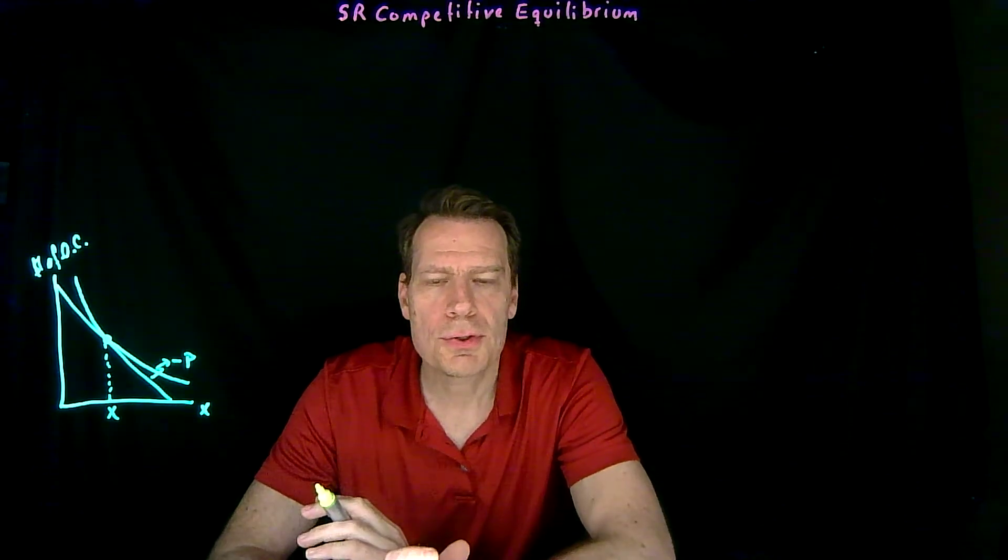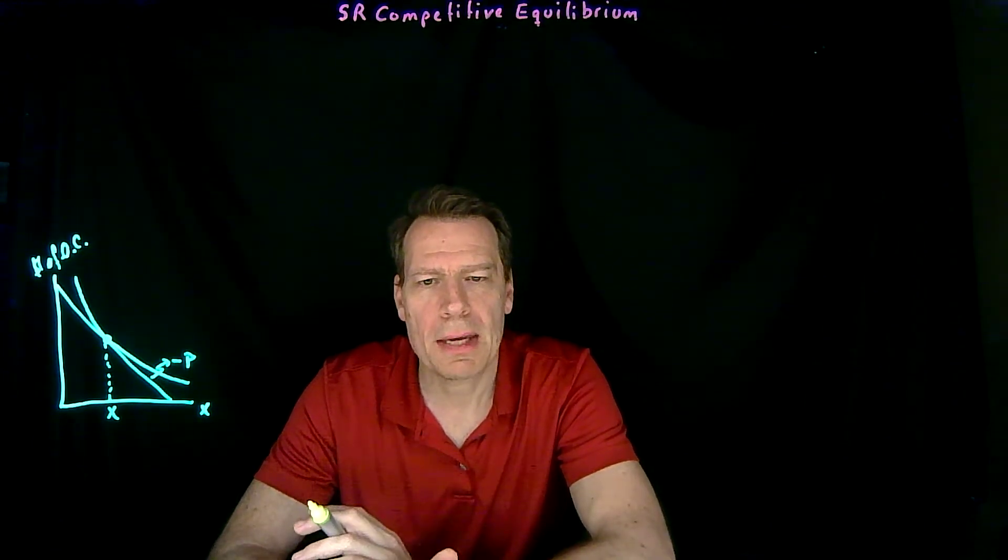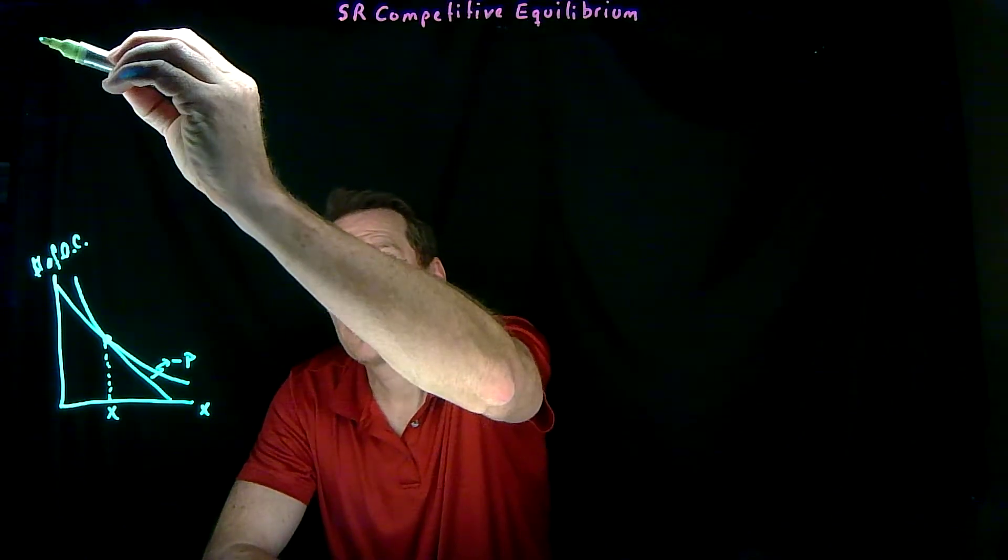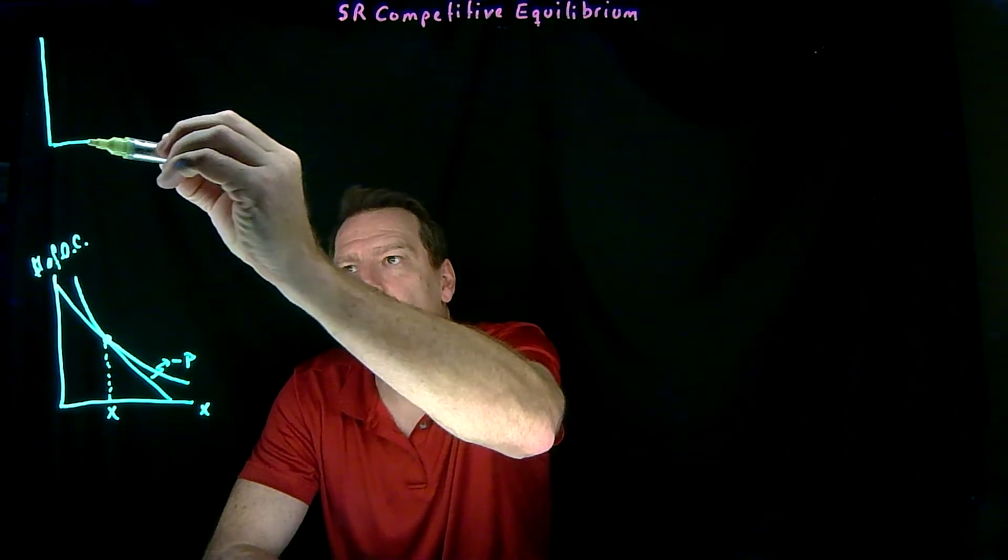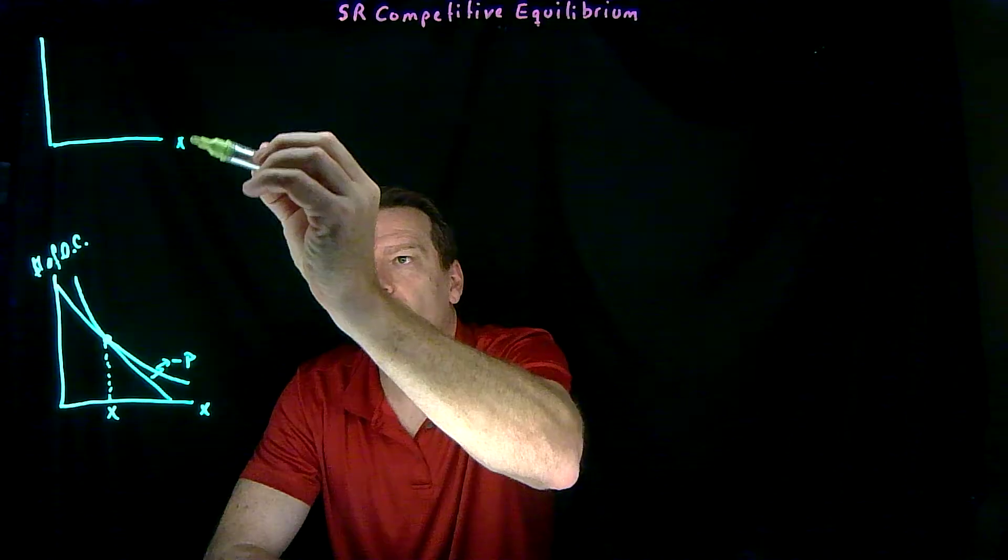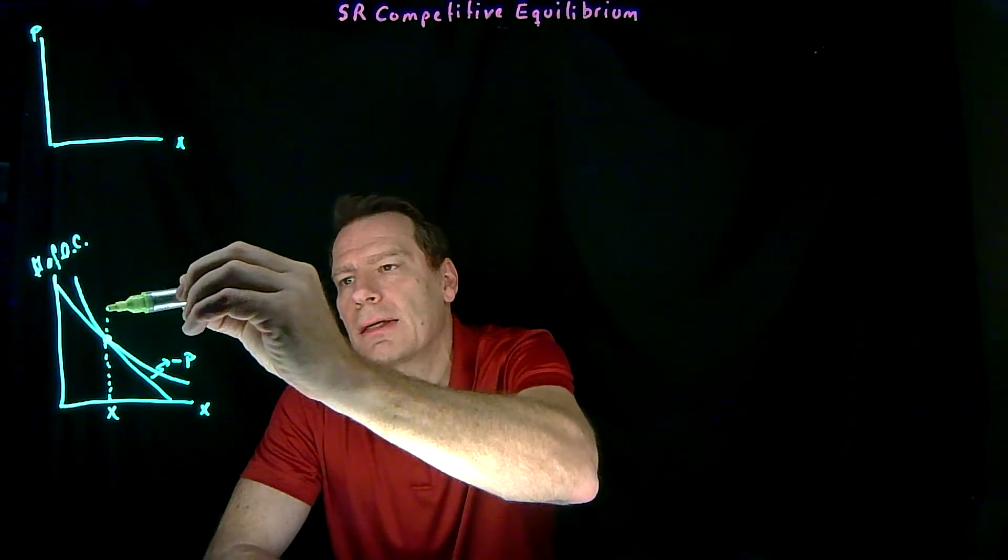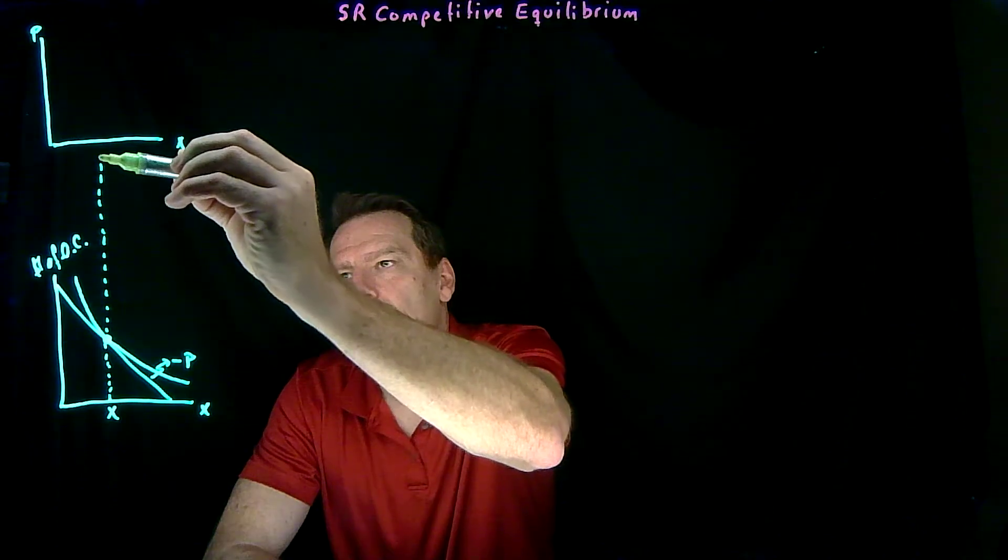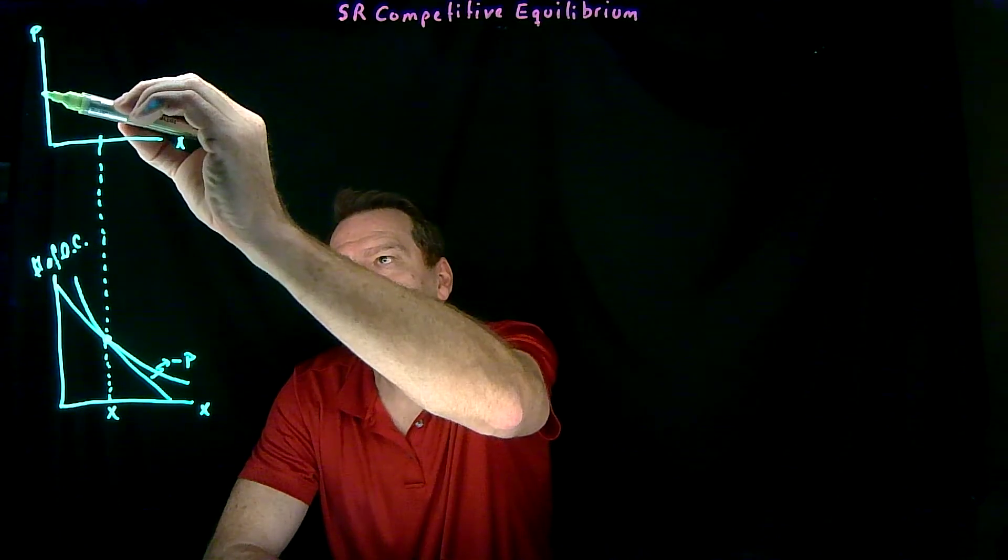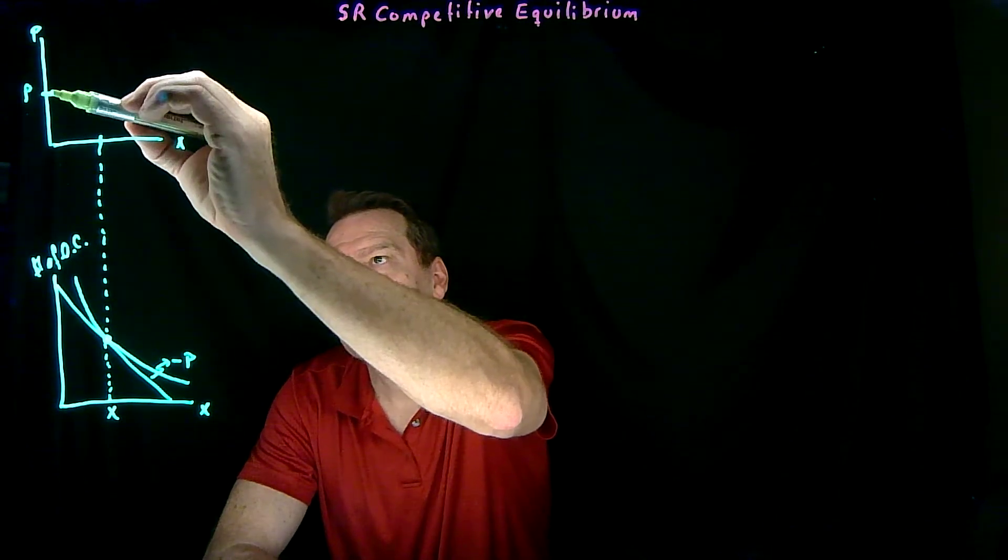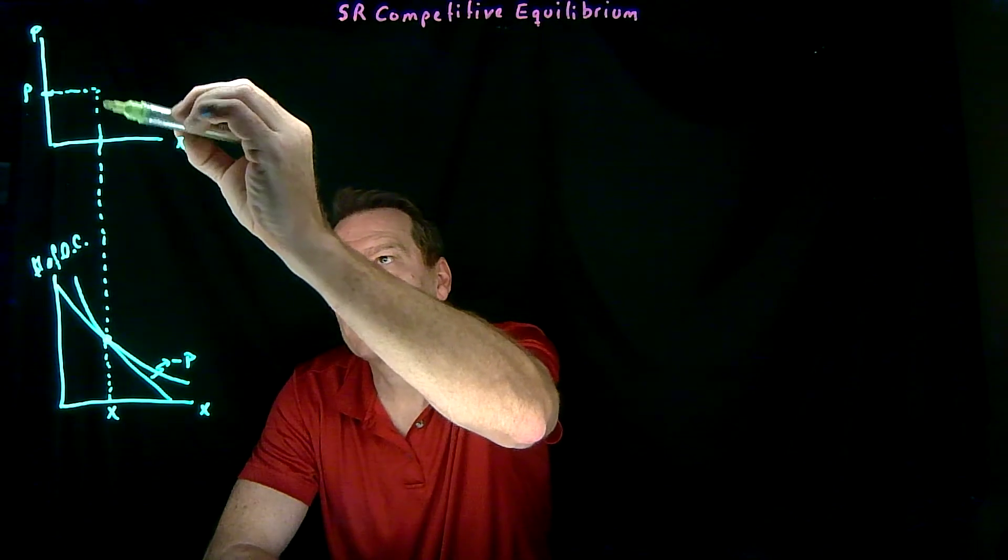So we found the consumer's first point on the demand curve, on the curve where we have price on the vertical axis and quantity on horizontal axis. So at the initial price, the consumer wants to purchase this much of x. That's one point on the demand curve.